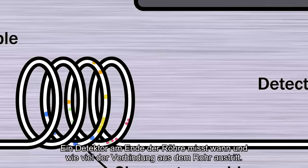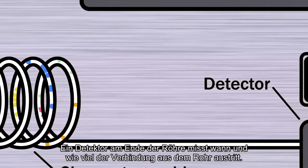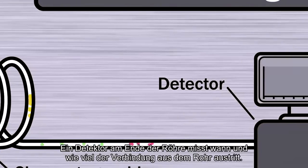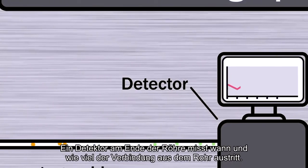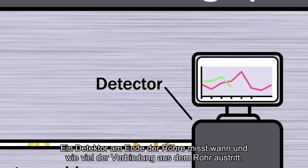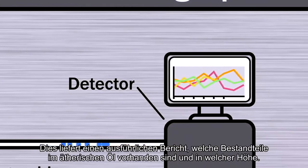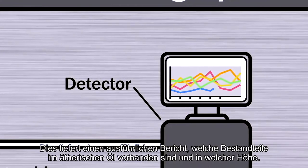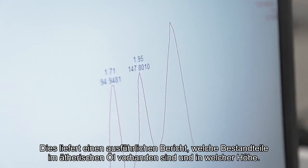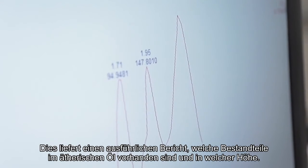A detector at the end of the tube measures when and how much of the compound exits the tube. This provides a detailed report on which constituents are present in the essential oil and at what levels.